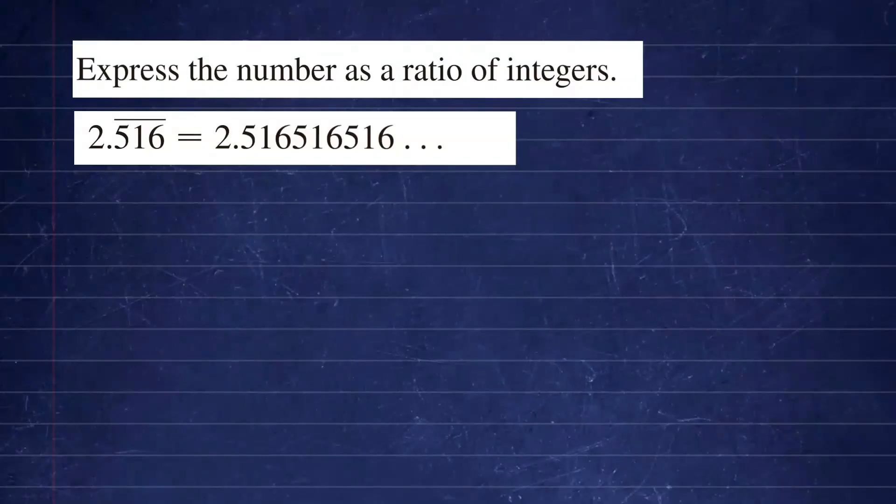We want to express the number as a ratio of integers. So here's the number 2.516 repeated. As you can see, your repeating decimal portion is 3 decimal places: 5, 1, and 6.